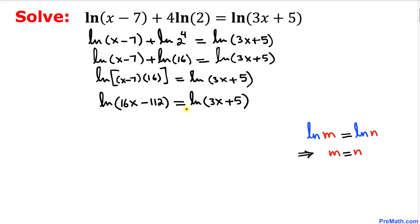Now we are going to use this property: if we have natural log of m equal to natural log of n, then we can write m equal to n. So I can equate this part equal to this one.